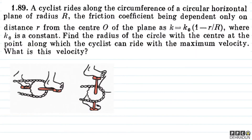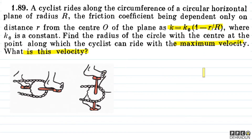We have the center O and the radial distance small r. As you can see, k = k₀ multiplied by (1 - small r / capital R), where capital R is the radius of the circular horizontal plane. We need to find the radial distance at which the cyclist can ride with maximum velocity.